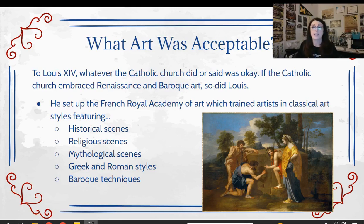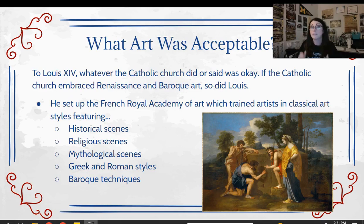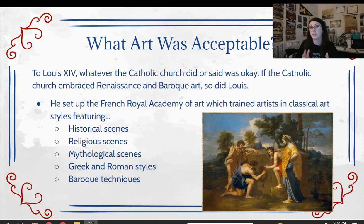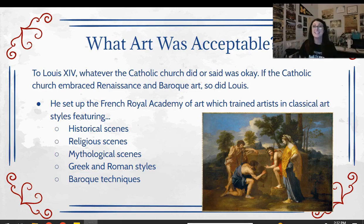Under Louis XIV, we get the French Royal Art Academy, which was dictated to by the king, who said here's what's acceptable to be worth painting. It has to be historical scenes, religious scenes, mythological scenes. They did a lot of allegory and references to Greek and Roman mythology and history, because that was considered a sign of great intelligence. And they adopted the Baroque style, because during the time of Louis XIV, that's what was popular.